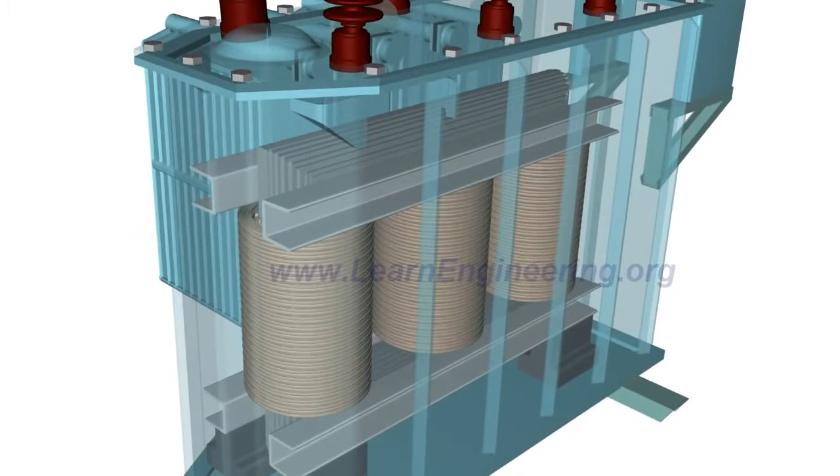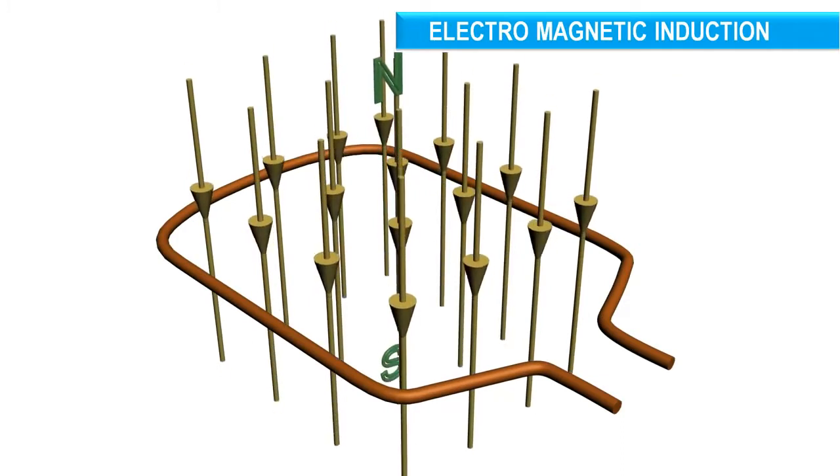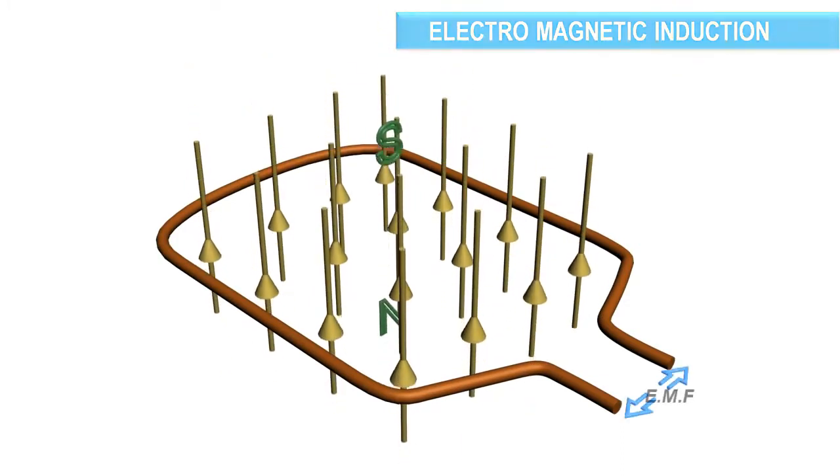The basic working principle of a transformer is simple: electromagnetic induction. According to this principle, a varying magnetic flux associated with a loop will induce an electromotive force across it.